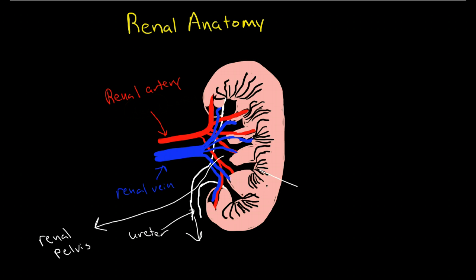The collecting ducts are here, and the collecting ducts are inside the renal medulla. Then we have the thick outer layer — you can see here there are sort of two layers. We've got the ones with the collecting ducts that make up little striped lines, and that's the medulla. Then on the outside we have the renal cortex.